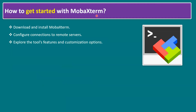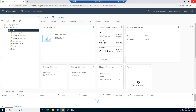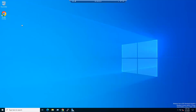Now, how to get started with MobaXterm: first we need to download and install it from the internet. Once installation is completed, we configure connections to remote servers. Finally, we explore the tool's features and customization options. Let's test all three steps in our lab.